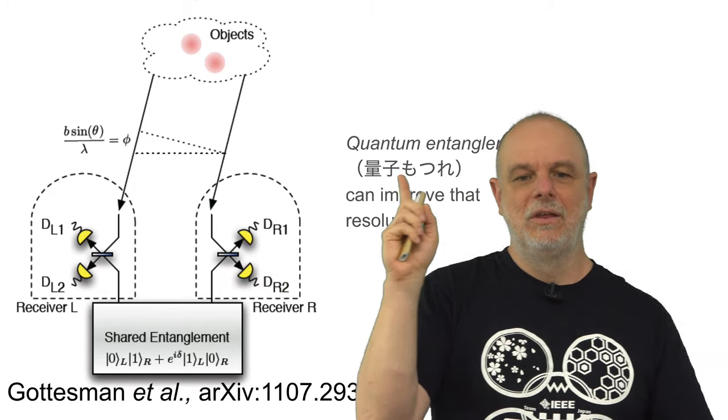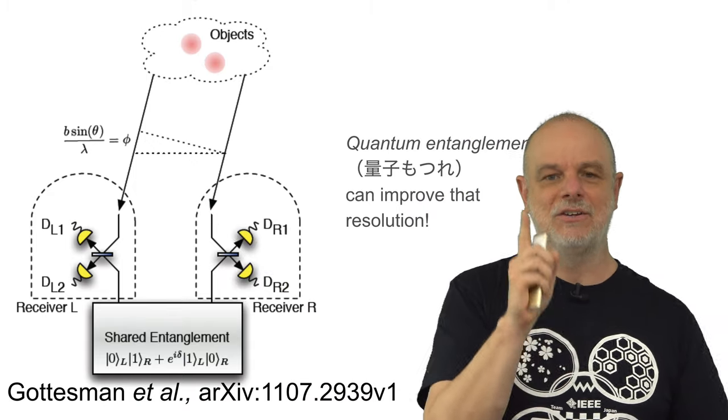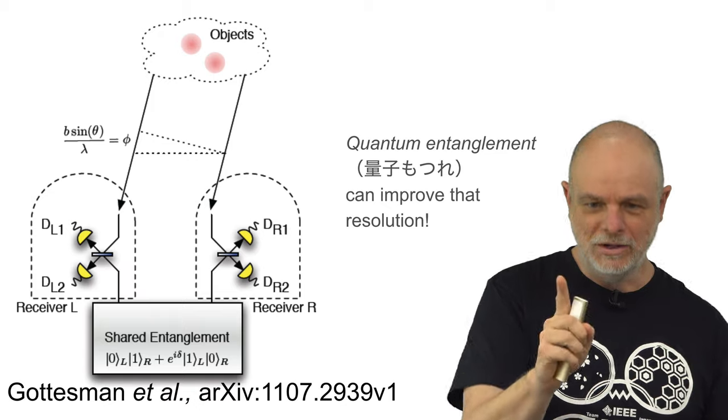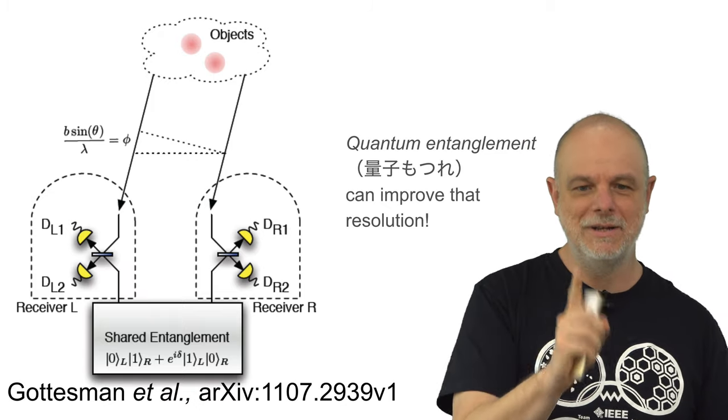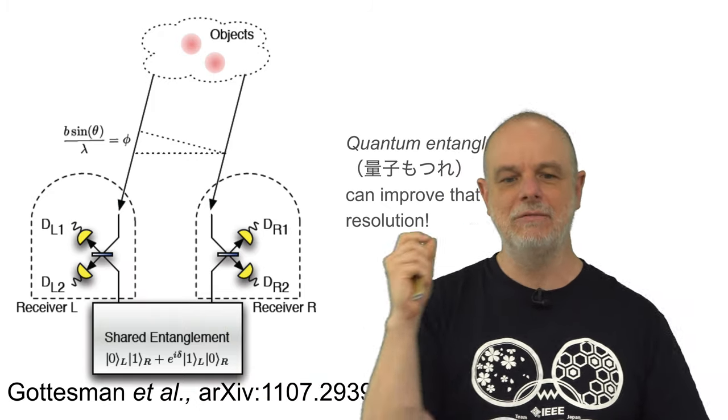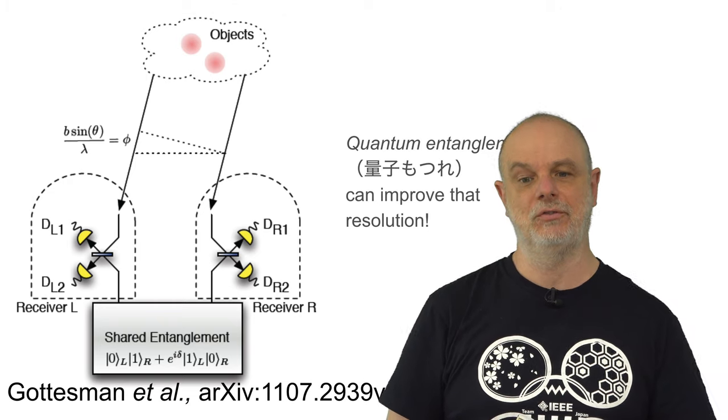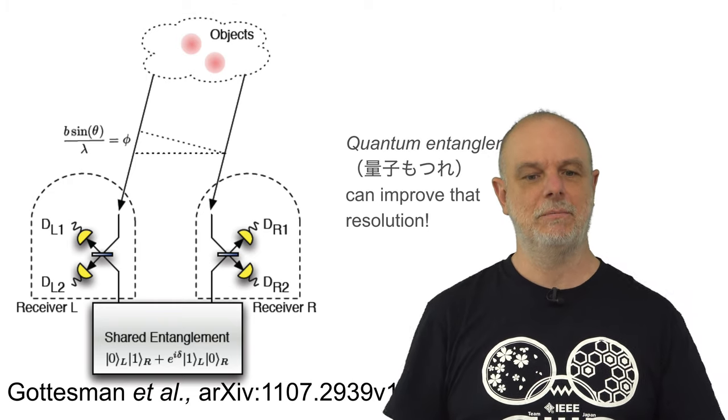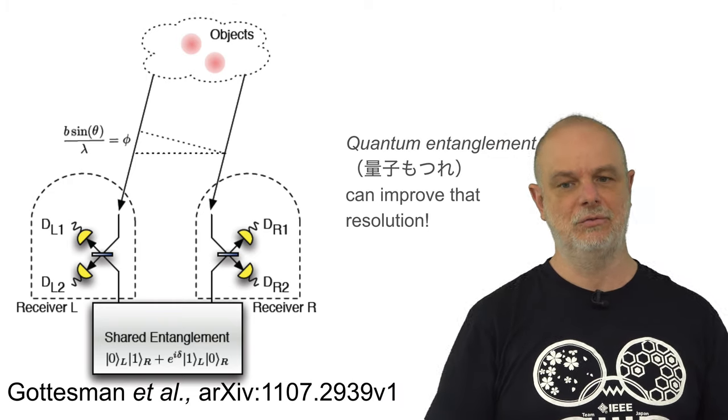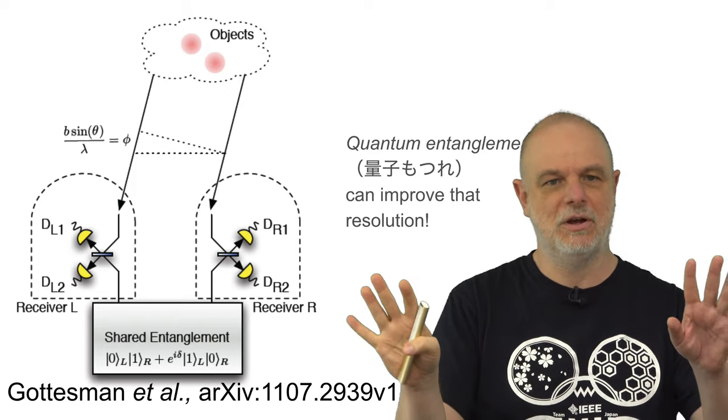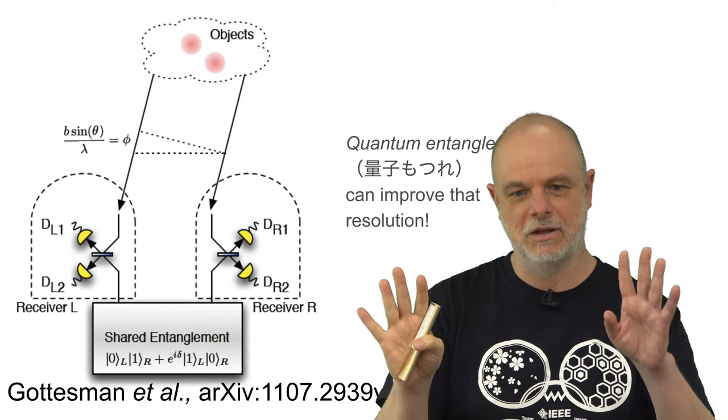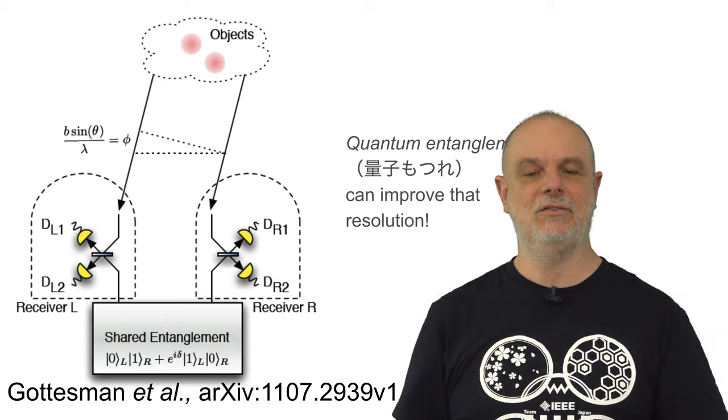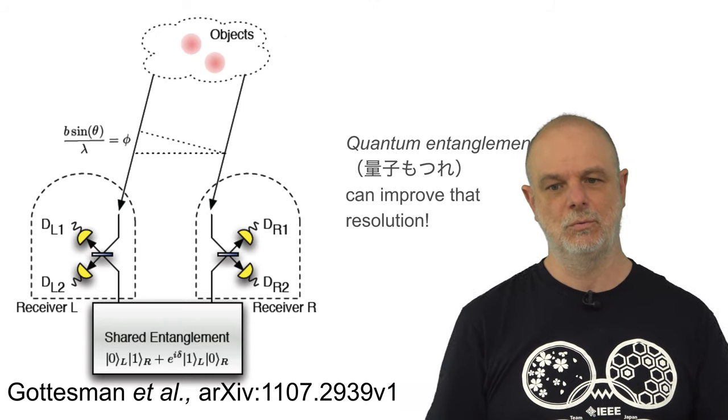Now, if, in fact, you have quantum information, quantum entanglement, you could actually go even further in improving the resolution of a system like that, using a technique developed by Daniel Gottesman and his collaborators. Now, we're not going to have time to talk about what quantum information and quantum entanglement are, but again, this is an example of how the information can be used in the real world.